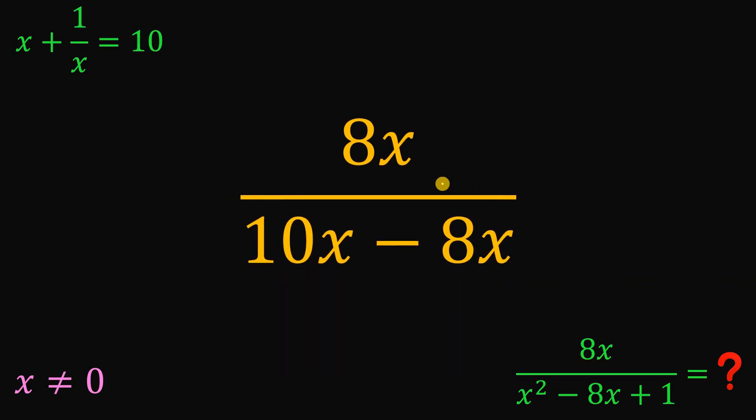So our expression now becomes 8x over 10x minus 8x. And the denominator, 10x minus 8x, is just 2x.